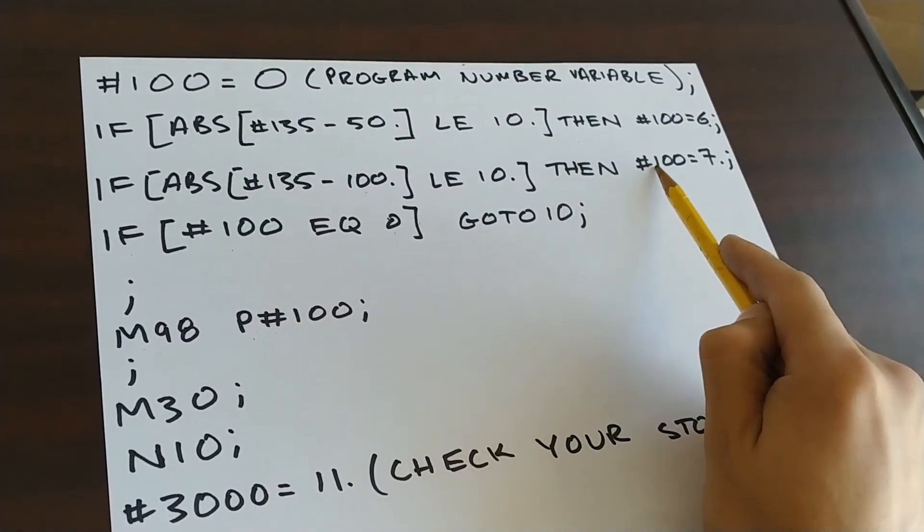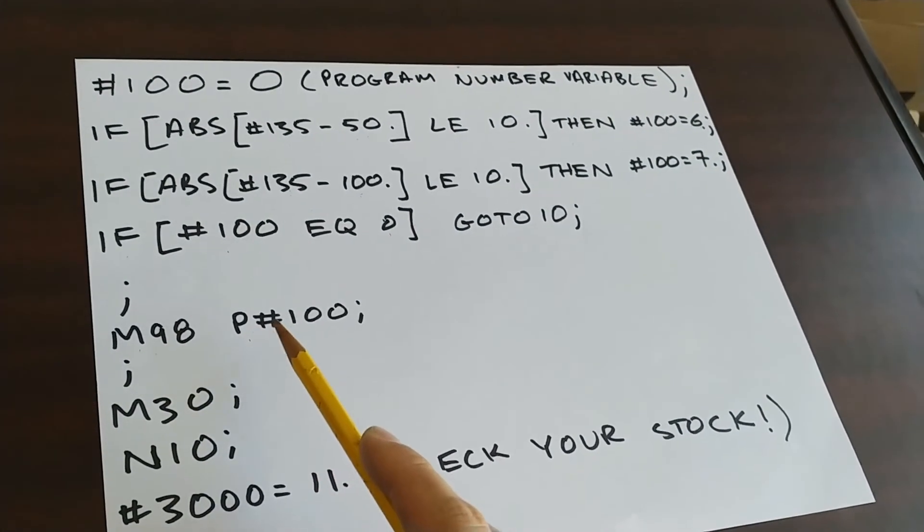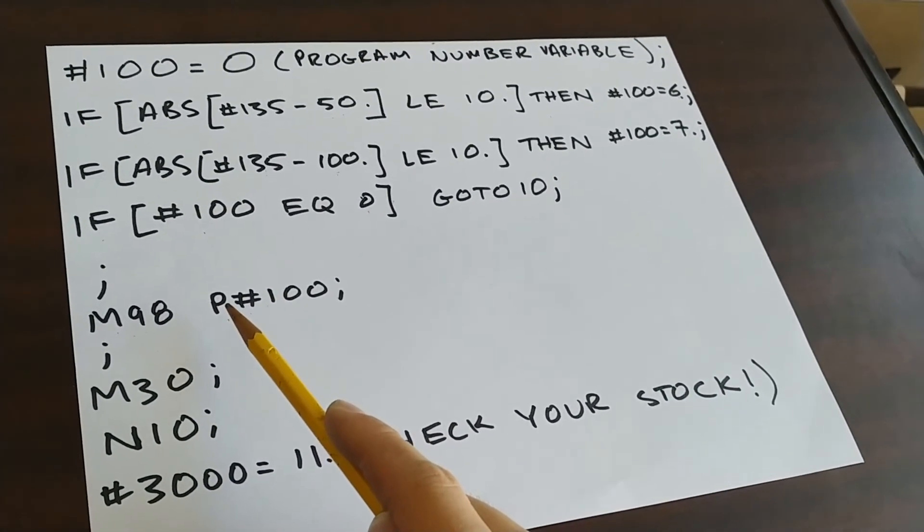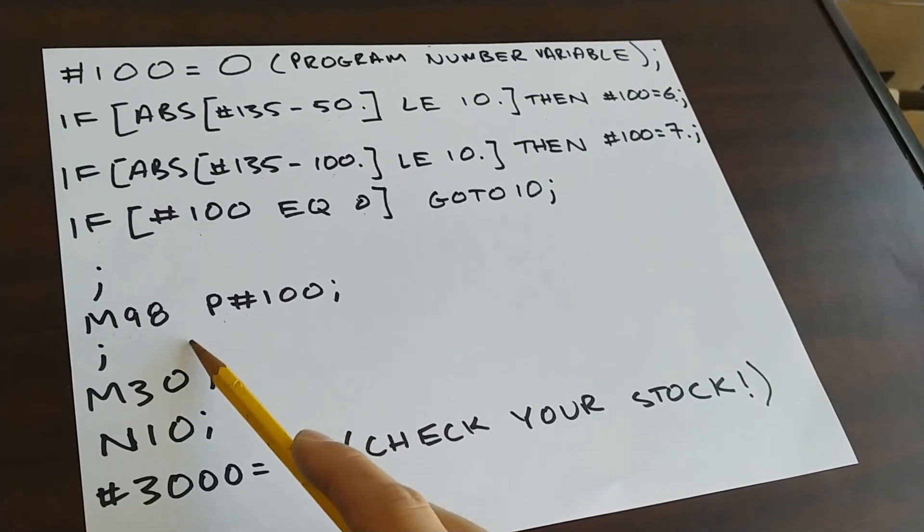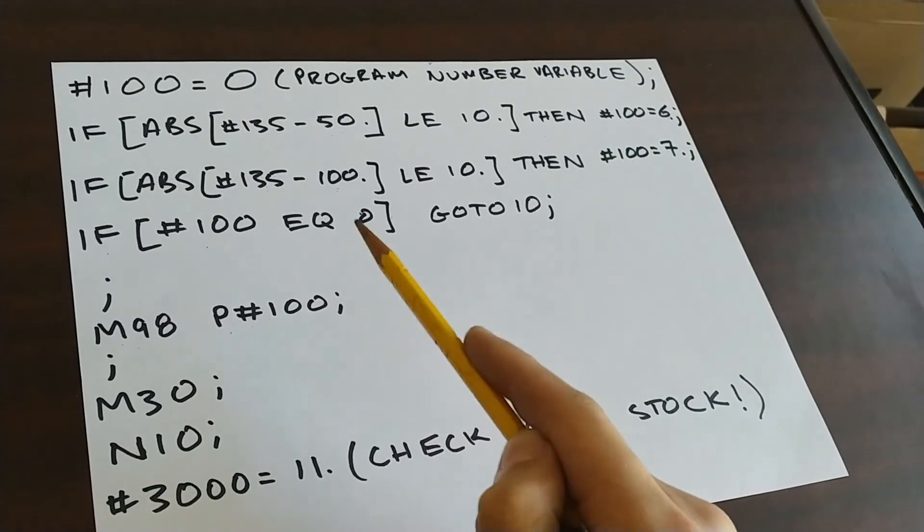If this statement was true, pound 100 got set to 7. When I get to this line, the machine will jump into program 7. Once I finish that program, I'll jump out back to the main program, and then I'll get to the M30, the machine will stop and rewind back to the top.